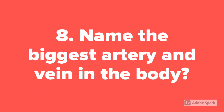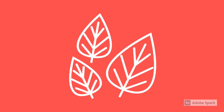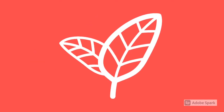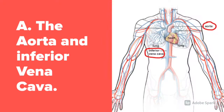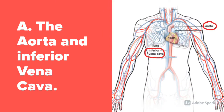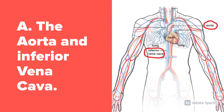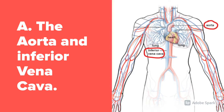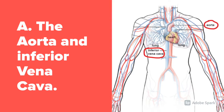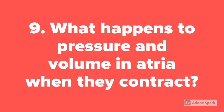Question 8. Name the biggest artery and vein in the body. The biggest artery is the aorta and the biggest vein is the inferior vena cava.